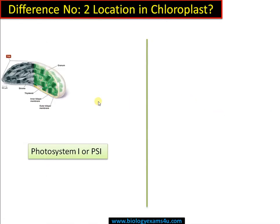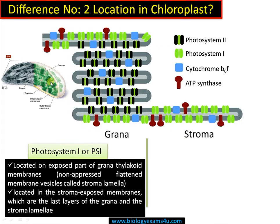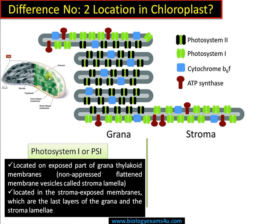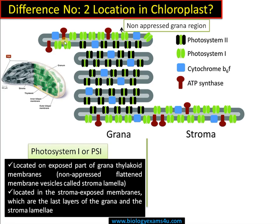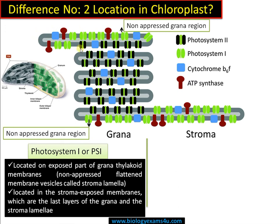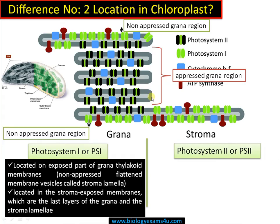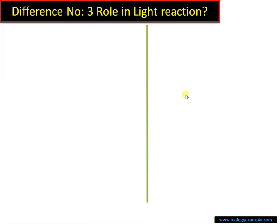The second difference is regarding location inside the chloroplast. There are two regions: appressed and non-appressed regions. Photosystem 1 is located on the non-appressed granal region — the region exposed to stroma, or the outer layers of grana — and also on the stroma lamella that connects adjacent grana. Whereas photosystem 2 is located on the appressed granal region, which is the internal part of the grana where stacking occurs.